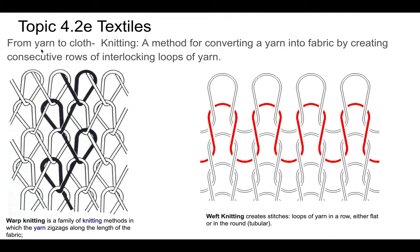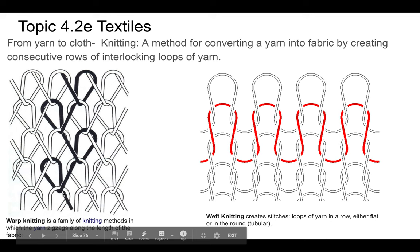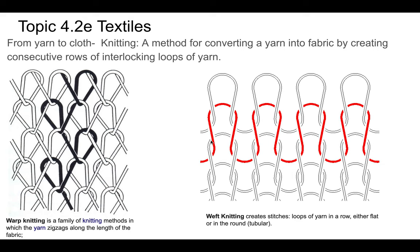Once you have yarn, you need to make it into cloth. One way is knitting — converting yarn into fabric by creating consecutive rows of interlocking loops. Warp knitting creates a zigzag pattern where fibers are interlocked in a zigzag way, whereas weft knitting creates loops in more of a row pattern.